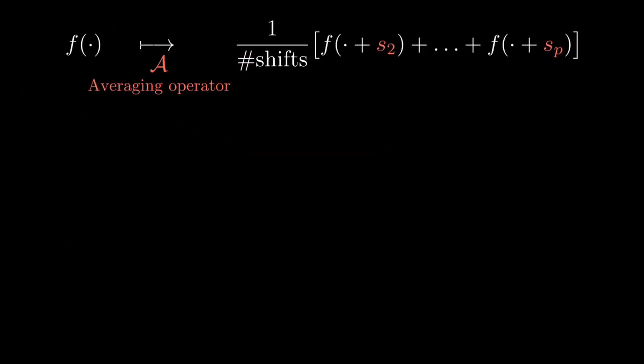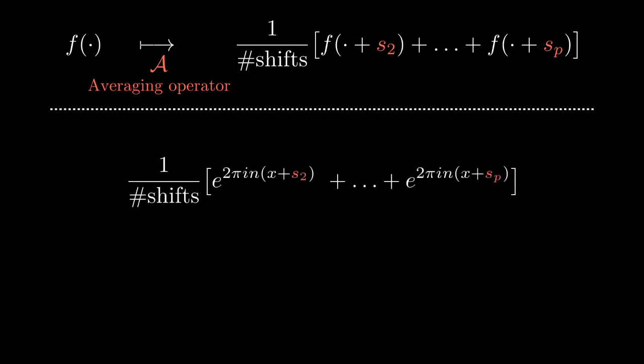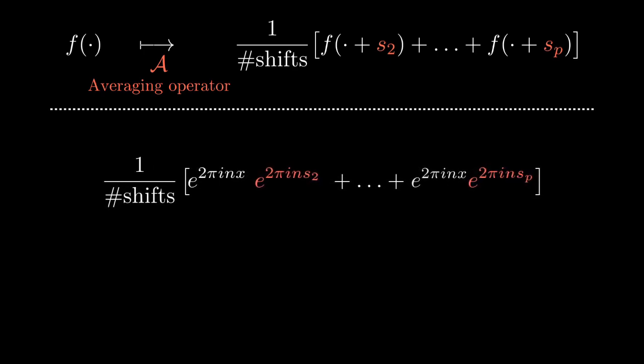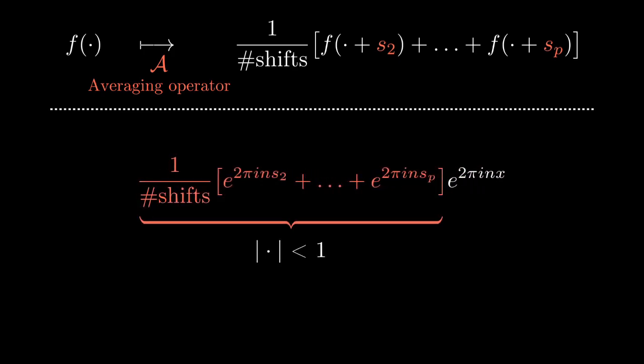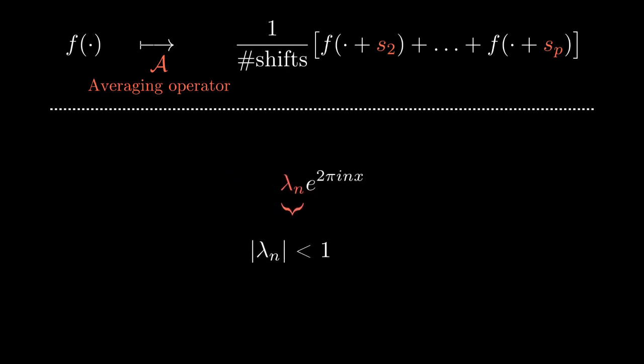The constant function is not the only eigenfunction of this operator. All imaginary exponential functions with integer frequencies, essentially cosine and sine functions, are also eigenfunctions of the averaging operator. By these manipulations here you can see that the eigenvalue of these imaginary exponential functions is the average of points on the unit circle. And it has to be a complex number with norm less than 1. We call these eigenvalues lambda n.